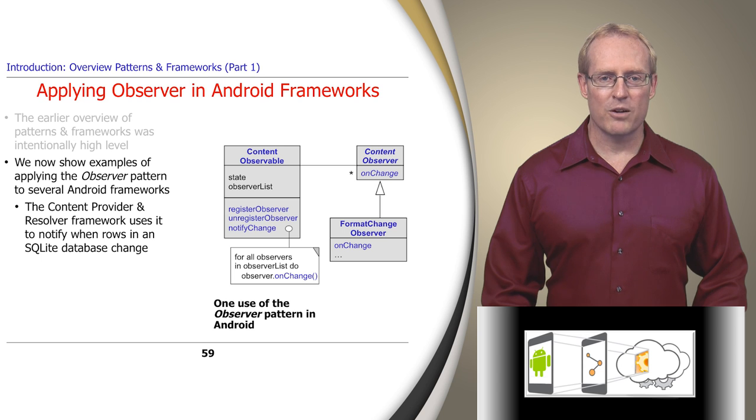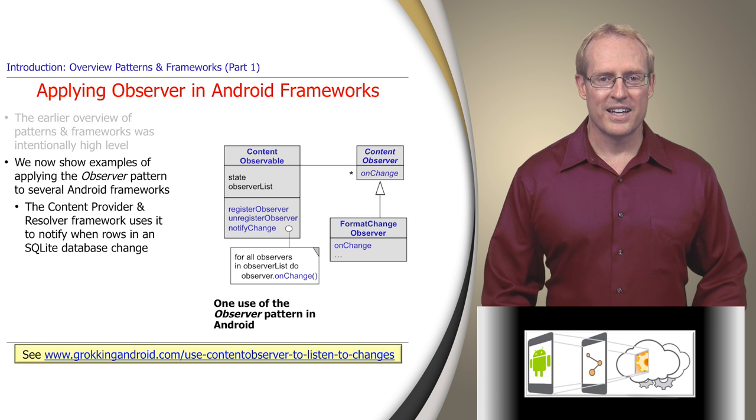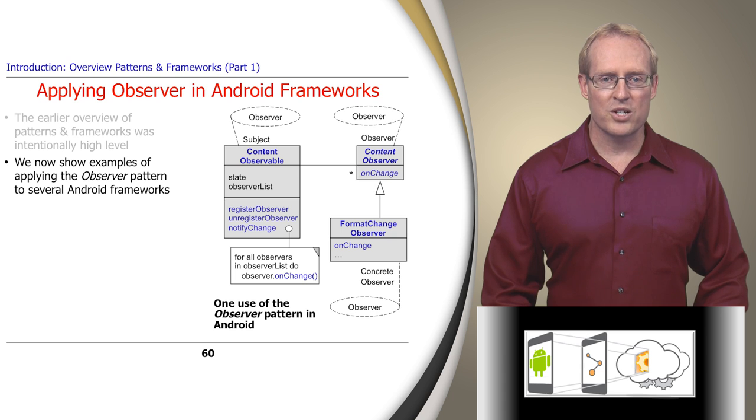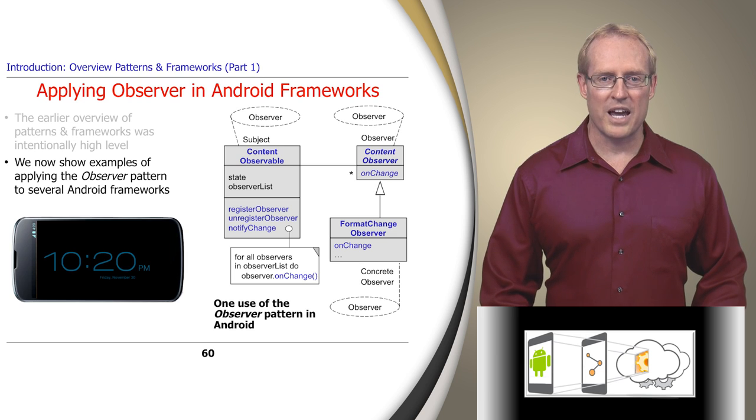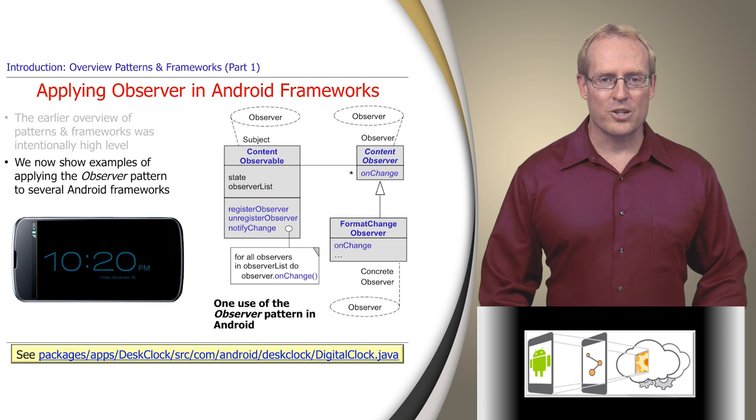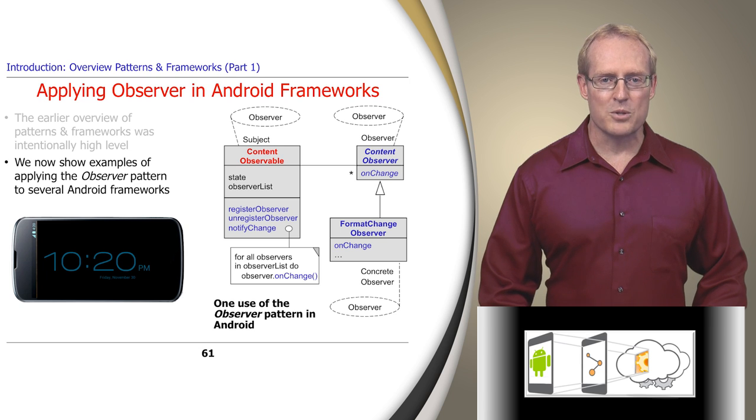For example, its content provider and resolver framework applies this pattern to automatically notify content observers when rows in an SQLite database change, as described at this link. This diagram shows the UML notation that maps classes in a content-observer-based design to key roles and responsibilities of the observer pattern. For example, the Android Desk Clock application uses the observer pattern to monitor user display preferences, such as the use of 12-hour versus 24-hour time, as shown at this path name. The Android Content Observable plays the role of the subject in the observer pattern. Likewise, the Content Observer plays the abstract observer role in the pattern, and the Format Change Observer plays the concrete observer role in the pattern.